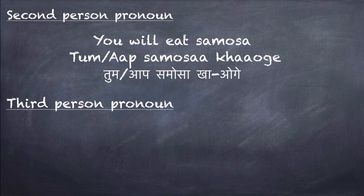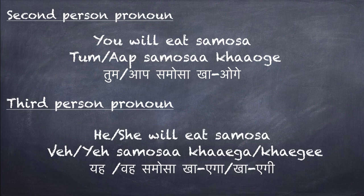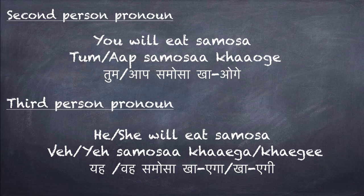Going ahead with the third person pronoun, which would be 'he,' 'she,' or even someone's name. For example, 'he or she will eat samosa' — 'weh' or 'yeh samosa khaega.' The 'ega' sound is added at the end of the root verb for masculine gender, and 'egi' at the end for feminine gender — so 'weh samosa khaega' or 'weh samosa khaegi.'